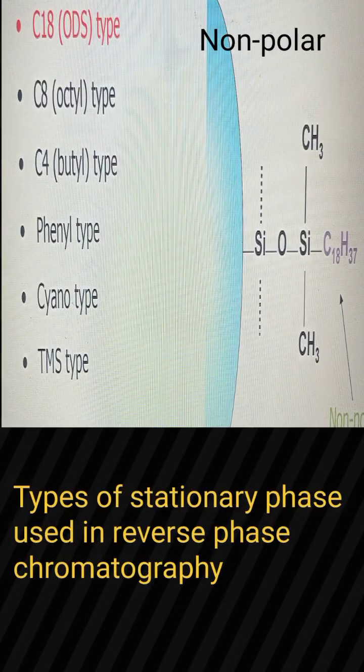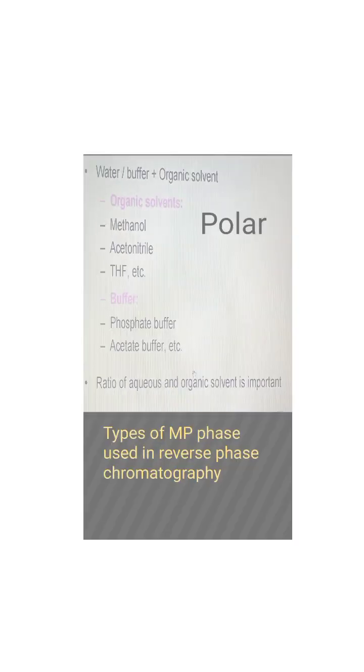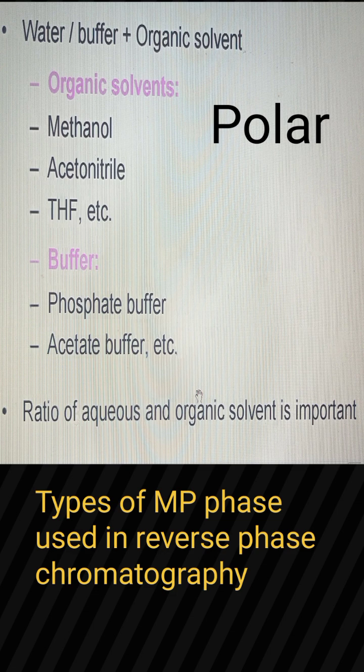The following types of stationary phase are used in reverse phase chromatography: C18 type, C8 type, C4 type, phenyl type, cyano type, and TMS type. These are the mobile phases used for reverse phase chromatography.